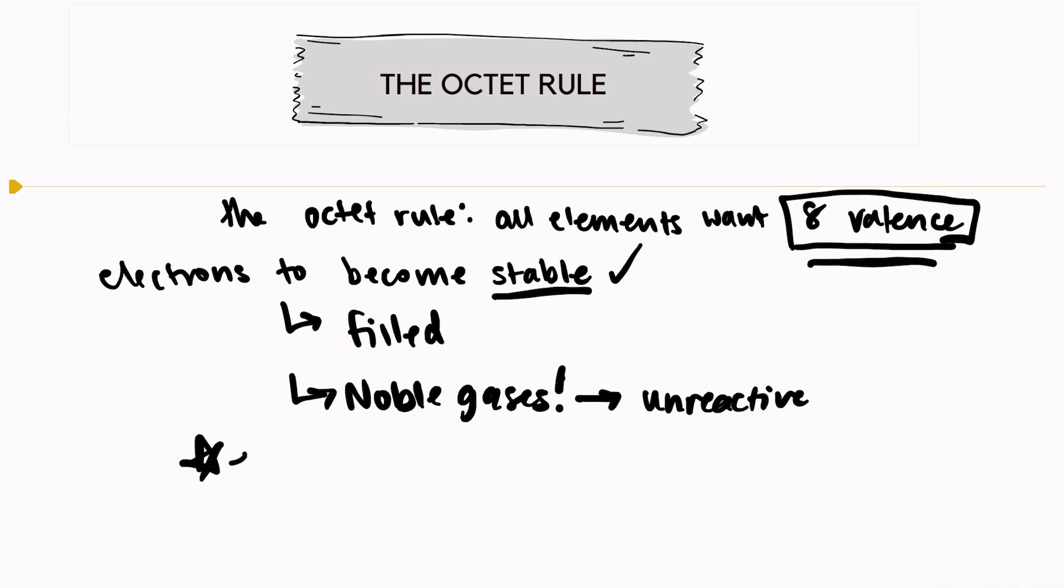There's also a few exceptions to this rule. Helium only has two valence electrons. It has two electrons in total actually, but also two valence electrons. And it's completely stable because it only fills the 1s energy level. Energy level one only has an s sublevel. And because it's completely filled up, helium is stable.